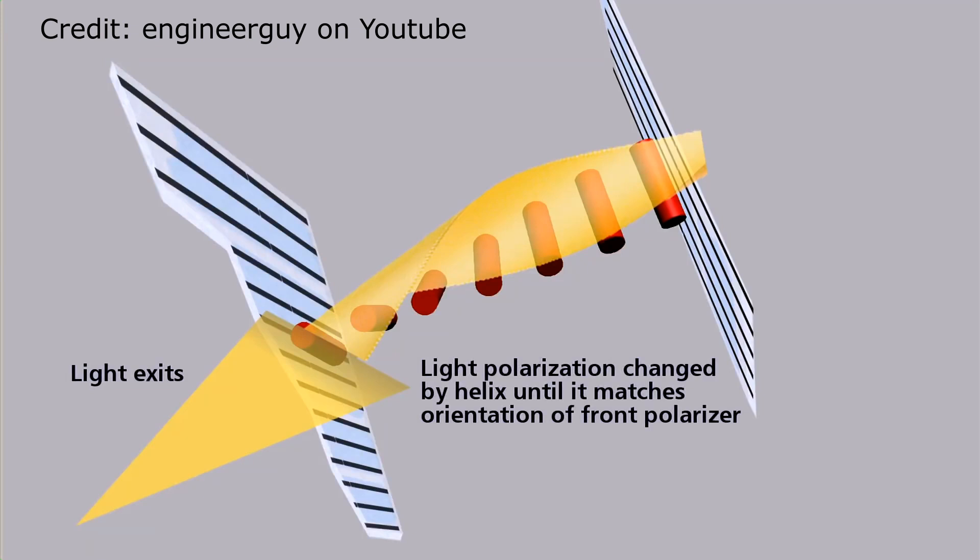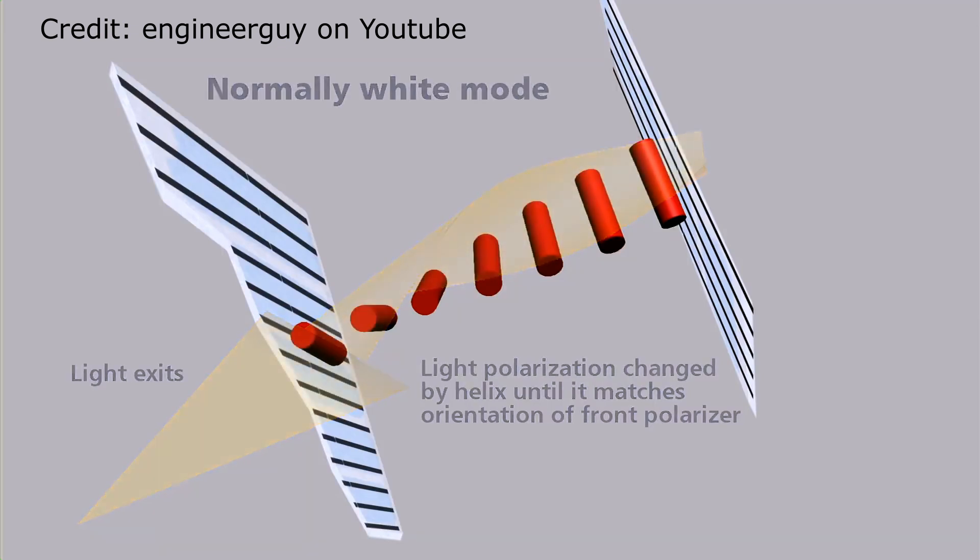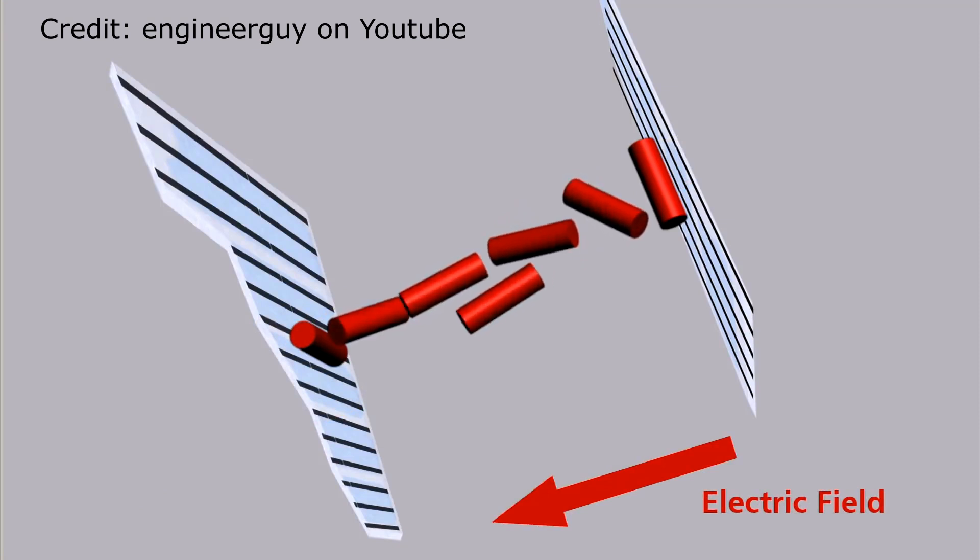These crystals are also dipoles. So if an electric field is applied, they orient themselves accordingly to this field. If they are oriented, they do not rotate the light in the way that it can pass the second filter and the screen is black.